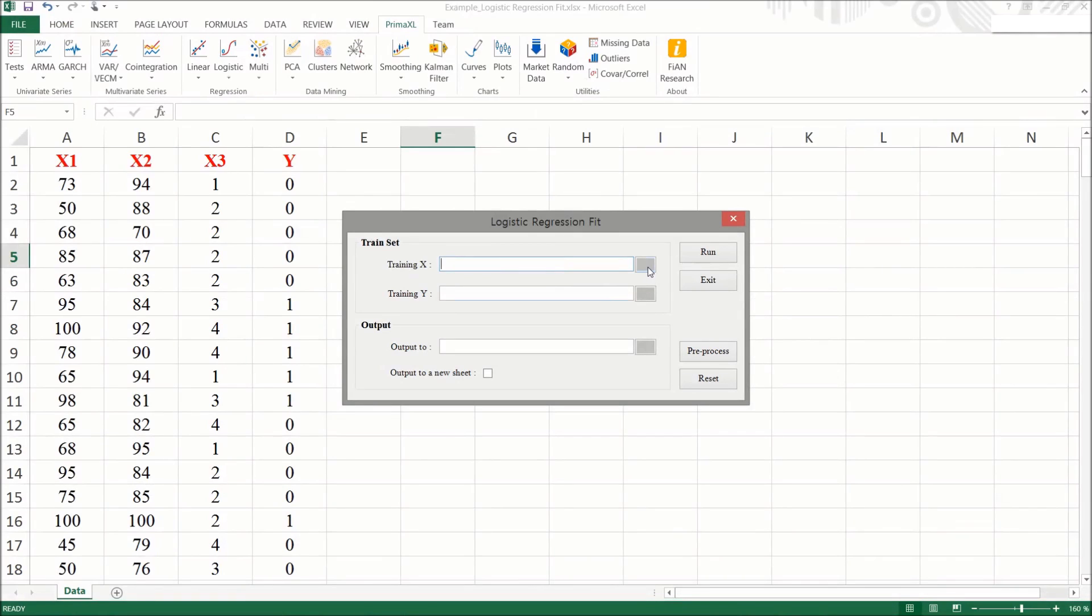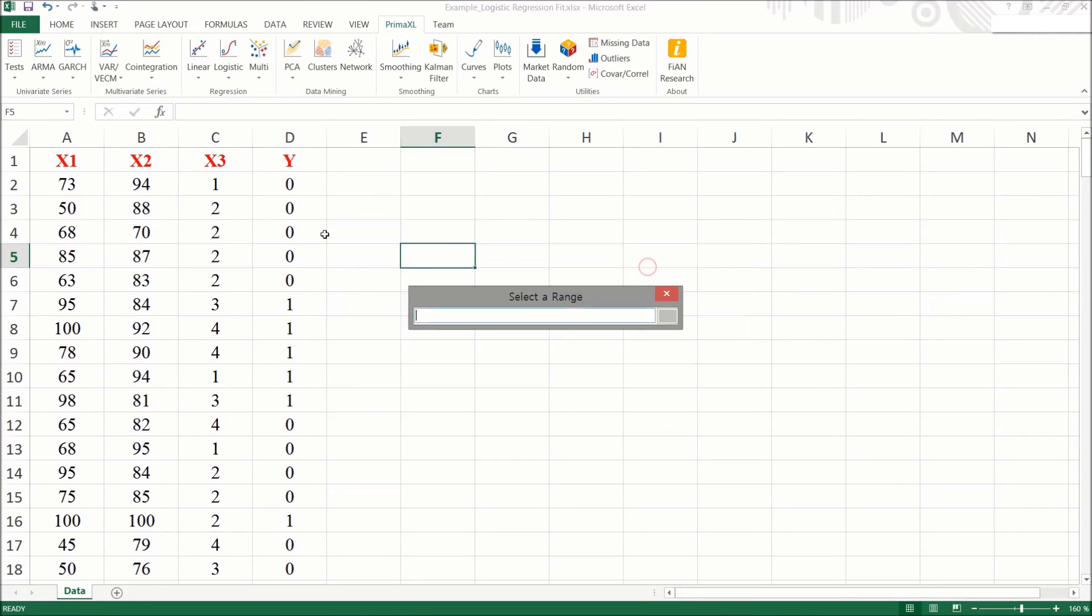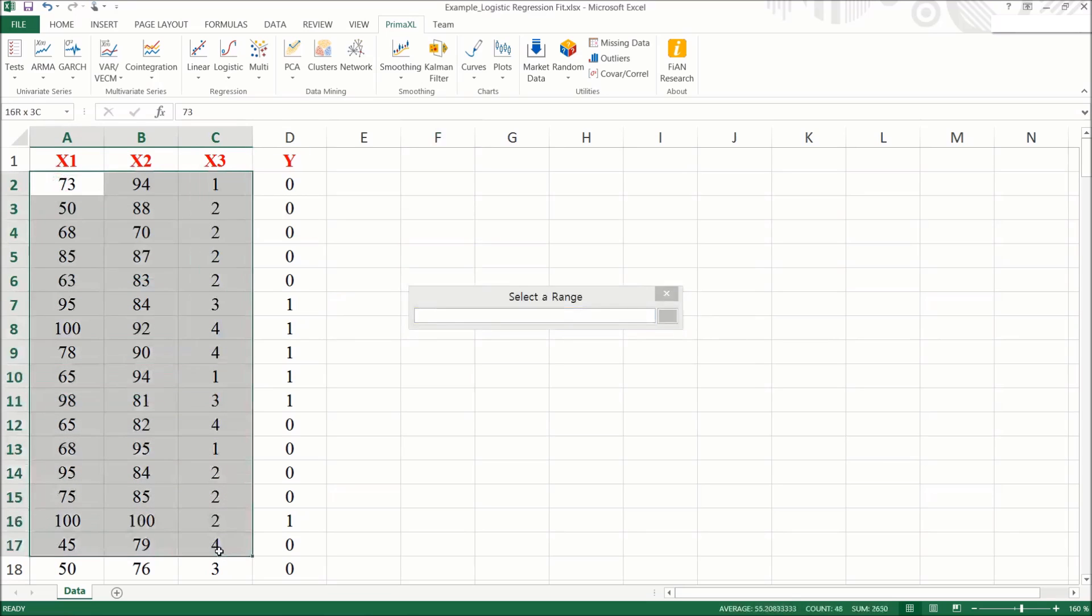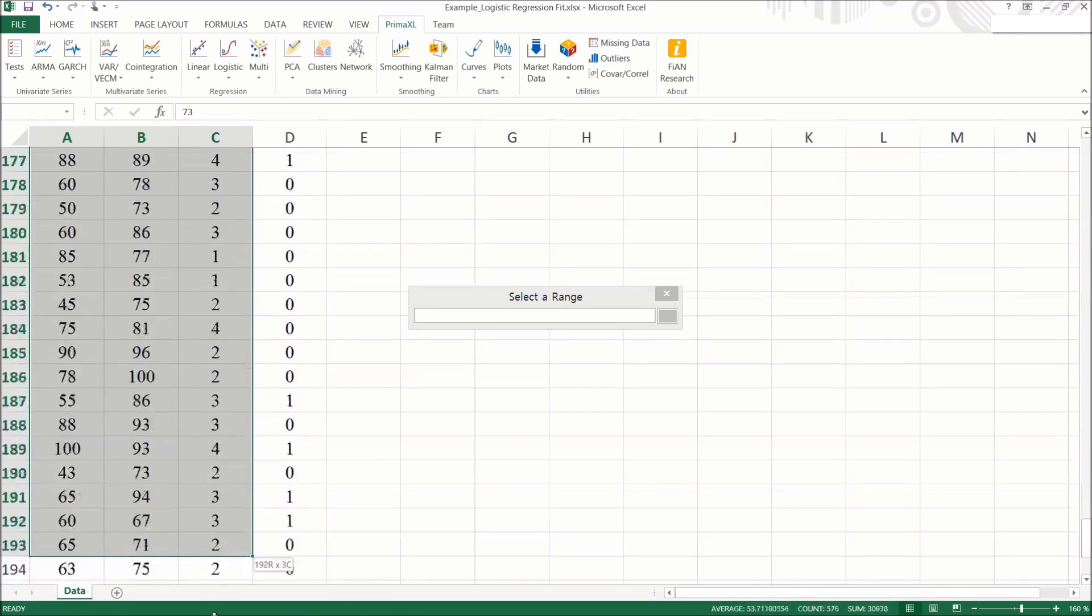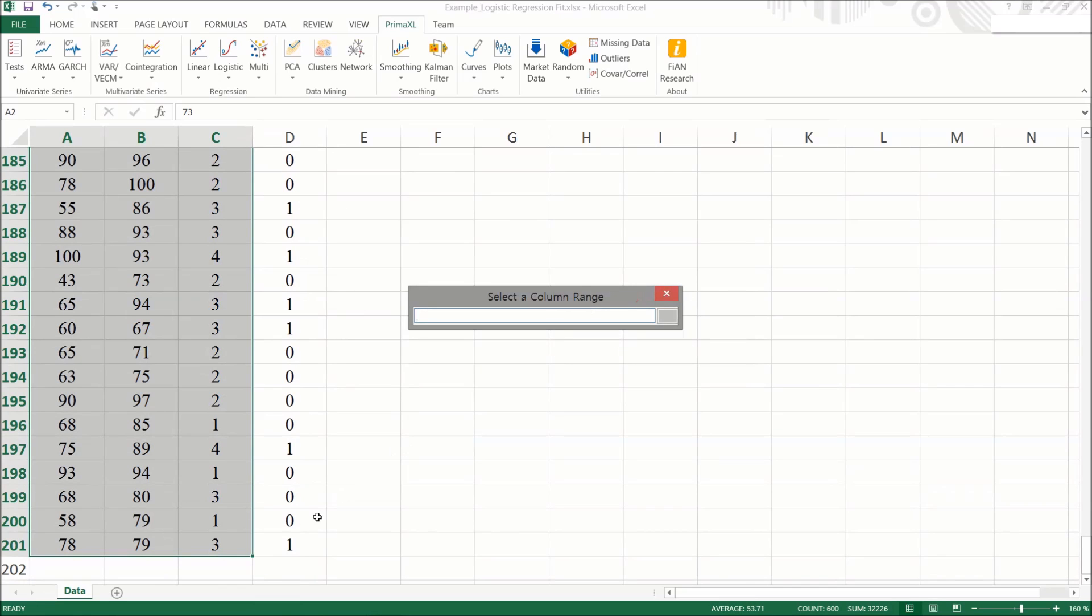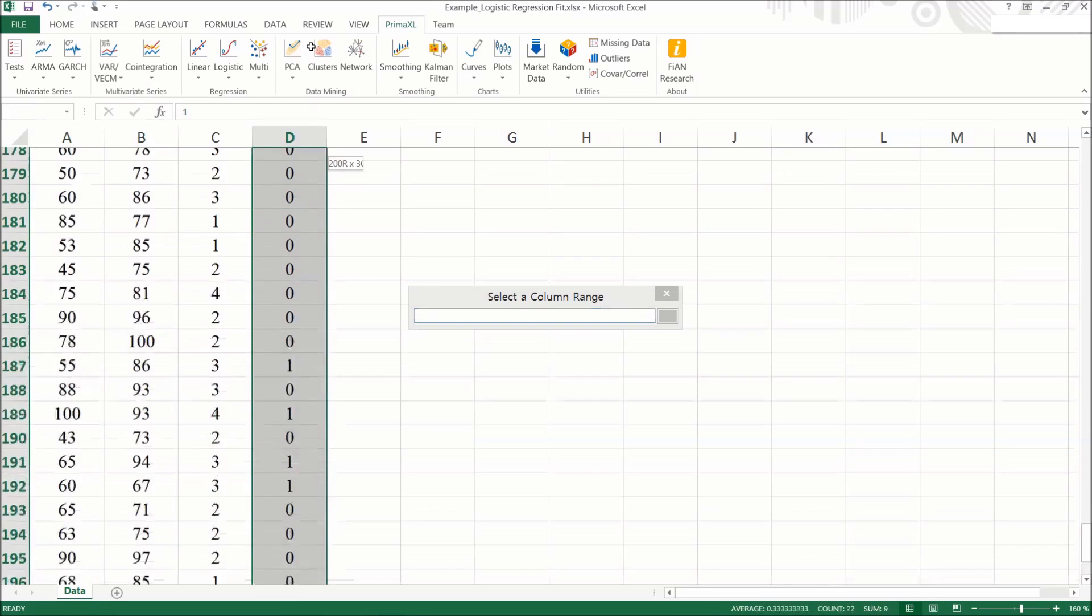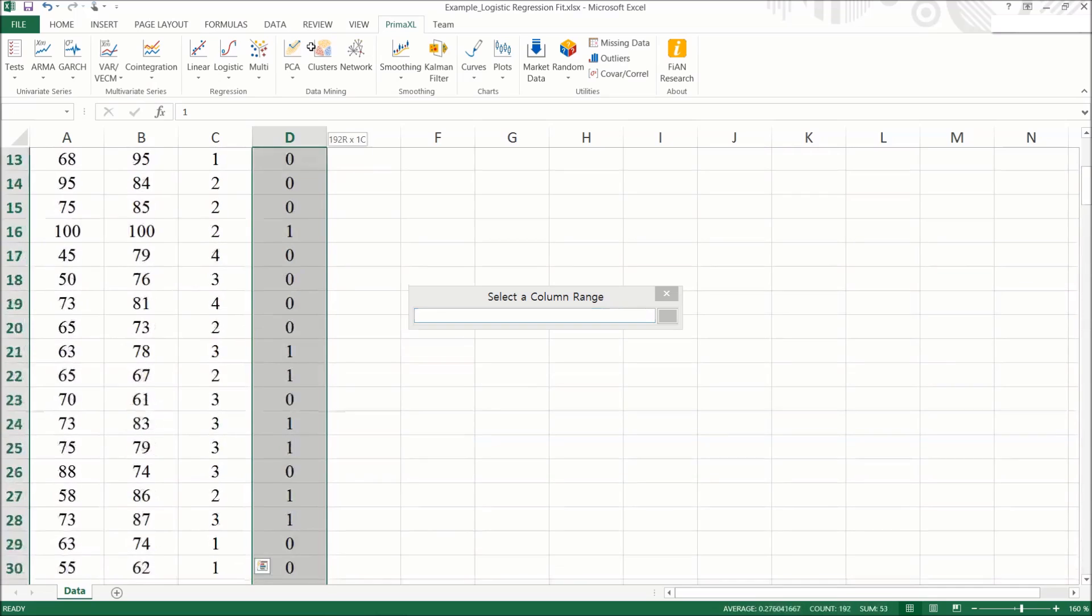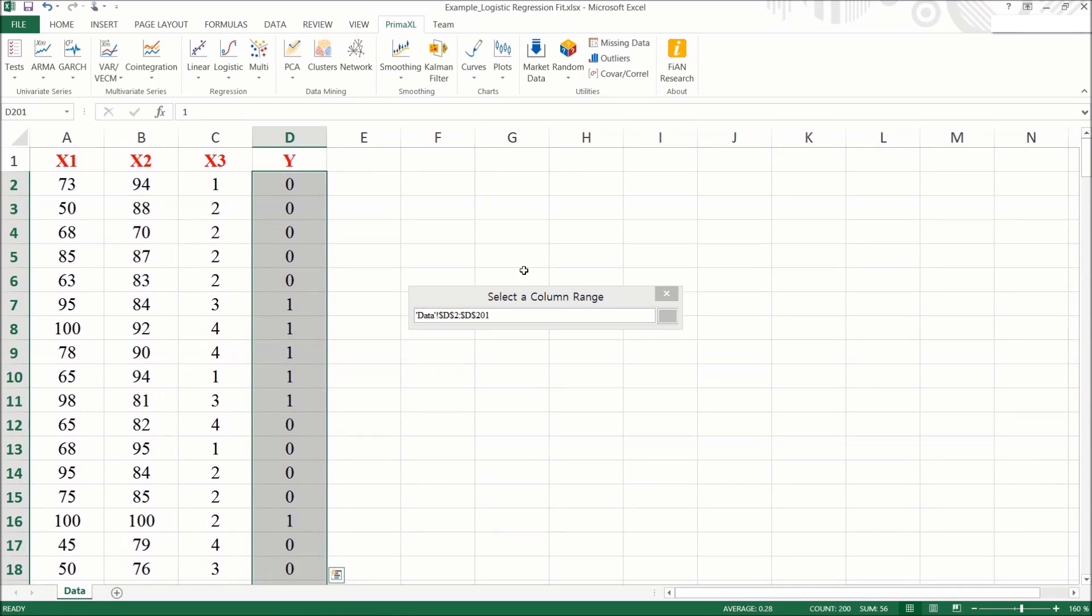We can click on the small button to bring up the range input form, where it can easily select the data range and return. For here again, click, select, and return.